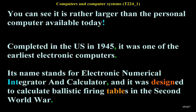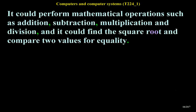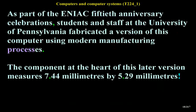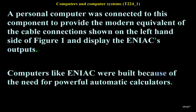Completed in the US in 1945, ENIAC was one of the earliest electronic computers. Its name stands for Electronic Numerical Integrator and Calculator, and it was designed to calculate ballistic firing tables in the Second World War. It could perform addition, subtraction, multiplication, division, find square roots and compare values. As part of the ENIAC 50th anniversary celebrations, students at the University of Pennsylvania fabricated a version using modern manufacturing processes — the component at the heart of this later version measures just 7.44mm × 5.29mm.